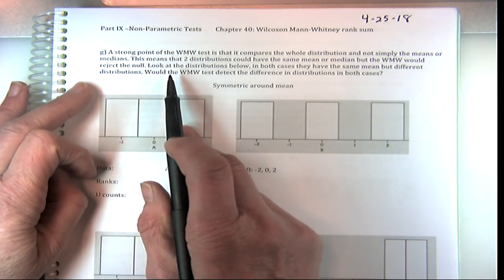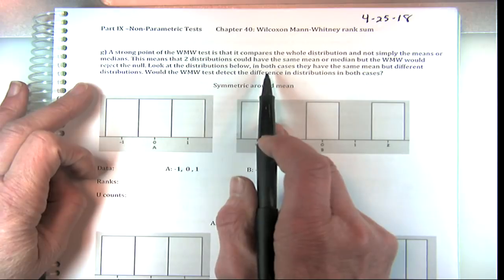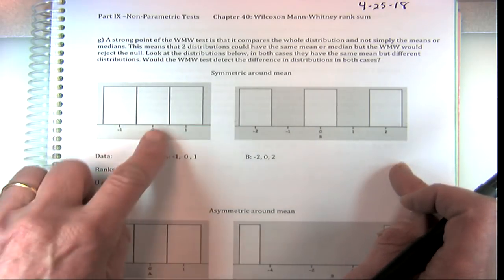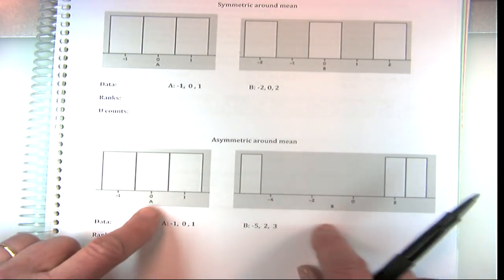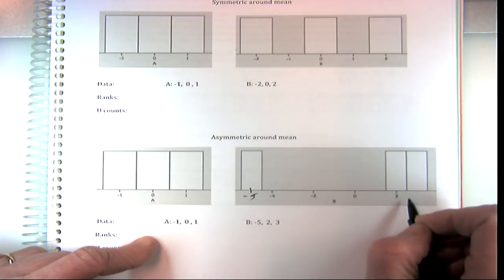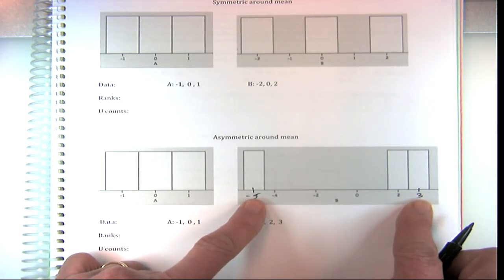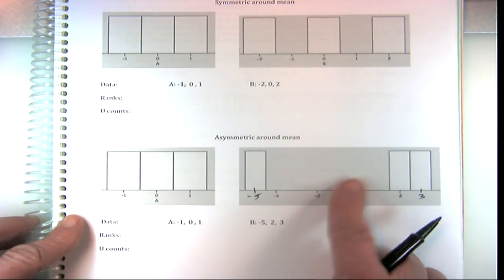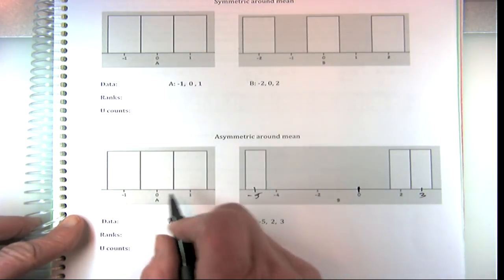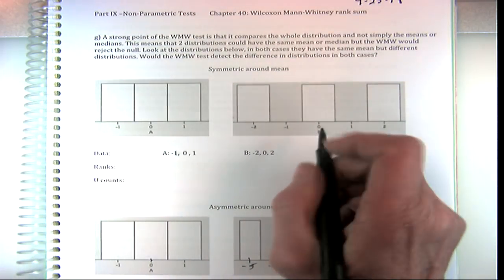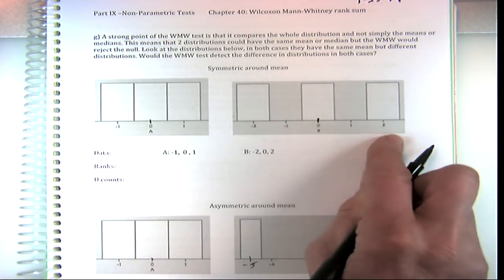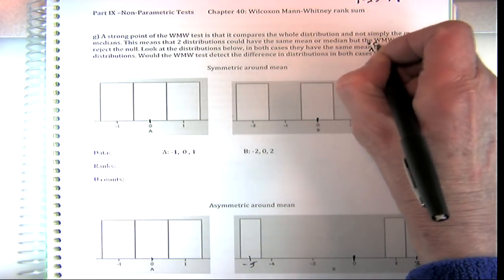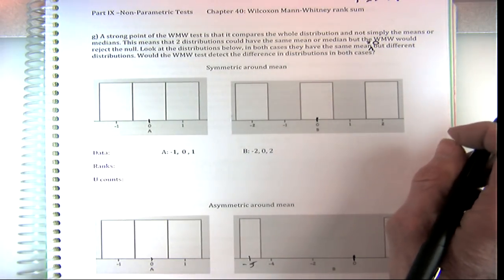So the Wilcoxon-Mann-Whitney test — look at the distributions below. In both cases, the two groups have the same mean: here's a mean of zero and here's a mean of zero. In this one you also have a mean of zero, and the numbers are negative five and two and three. Those five and negative five will also have a mean of zero. Now this one is asymmetric around the mean. The mean's right here. And here they're symmetric around the mean. In both cases they have the same mean, equal to zero, but they have different distributions — this one is more spread out.